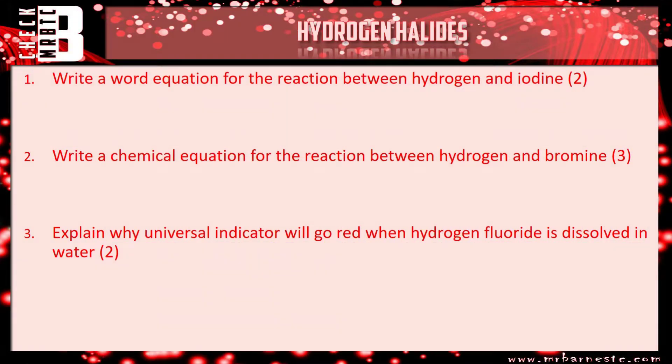Okay, let's start off with the word equation then. So hydrogen reacts with iodine. We react it together, so we put our arrow in, and it makes hydrogen iodide, remembering you're changing that ending to ide.